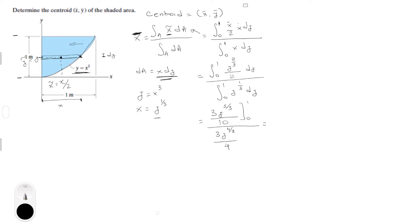Then it's easy because you have to plug in 1 for y and then 0, and 1 to any power is still 1. So that is 3 over 10 all over 3 over 4. So this is very simple right now but it gives you 0.4 and that is for x̄.